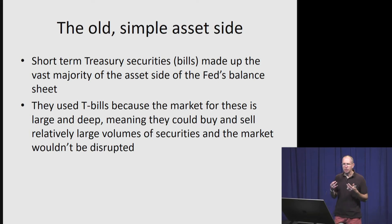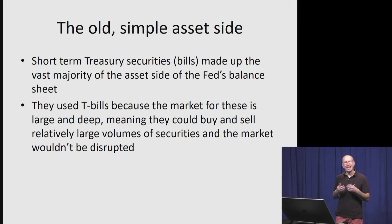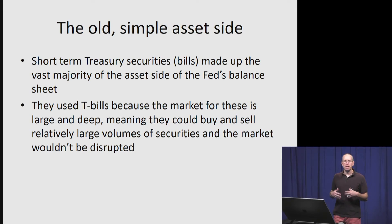In terms of the composition of the balance sheet, Treasury bills were the vast majority. The reason the Fed used Treasury bills is because the Treasury bill market is the deepest and most liquid of all the Treasury markets, so when the Fed would buy and sell these securities, there would be a very minimal impact on overall market functioning.